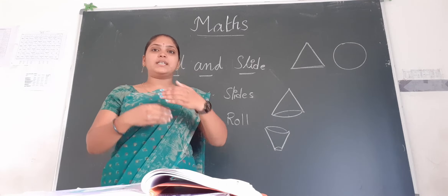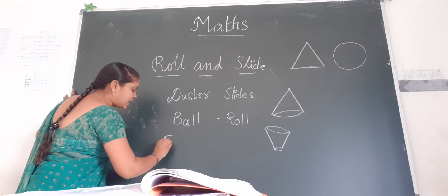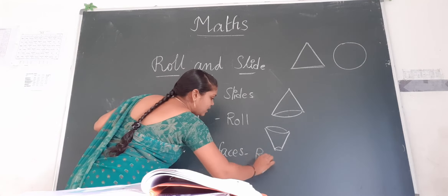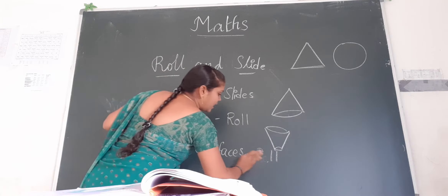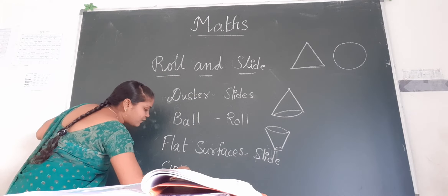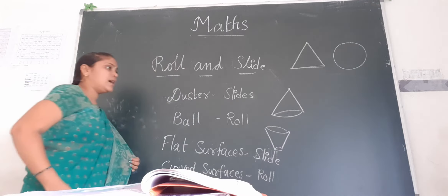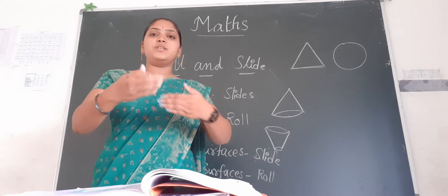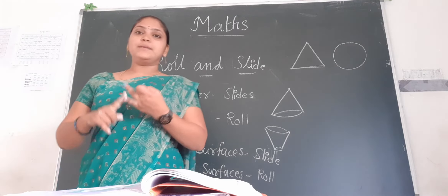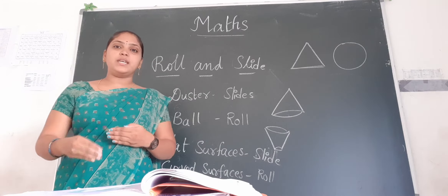Next we learned about roll and slide — what objects can roll and what objects can slide. Objects having flat surfaces can slide, for example a duster, pencil box, or your phone. Objects having curved surfaces roll, for example a ball. These are the topics from chapter one.